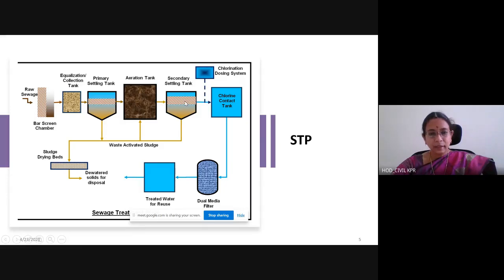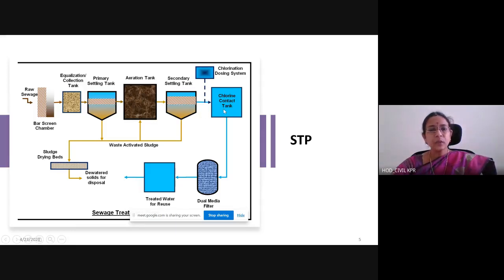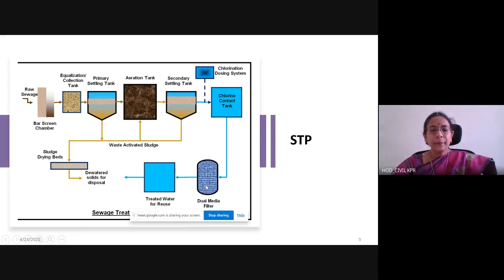After the secondary settling tank comes the contact tank, which is the disinfection tank. In most cases, chlorination dosing is being done — chlorine is the main parameter used for disinfection. After disinfection, the effluent is taken to a filter media. The filter media might have a single media or a dual media, or two different filters can be placed in a separate treatment plant. The media may be gravel, sand particles, or activated carbon — any type of media can be used for filtration.